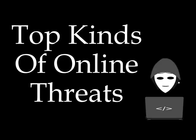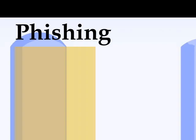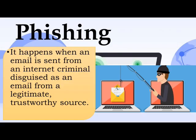The following are the top kinds of online threats that you should be aware of. Phishing happens when an email is sent from an internet criminal disguised as an email from a legitimate, trustworthy source. The message is meant to lure you into revealing sensitive or confidential information.